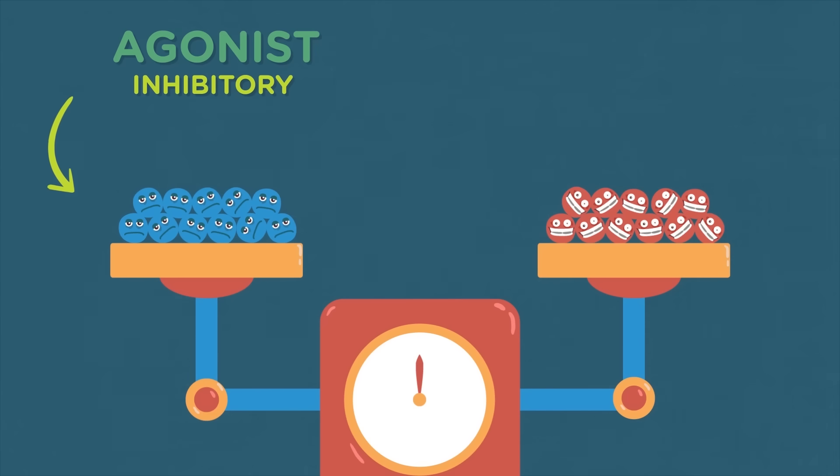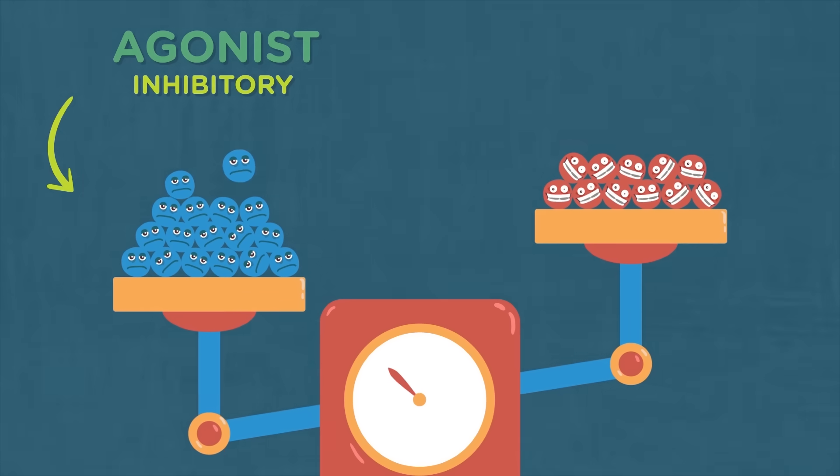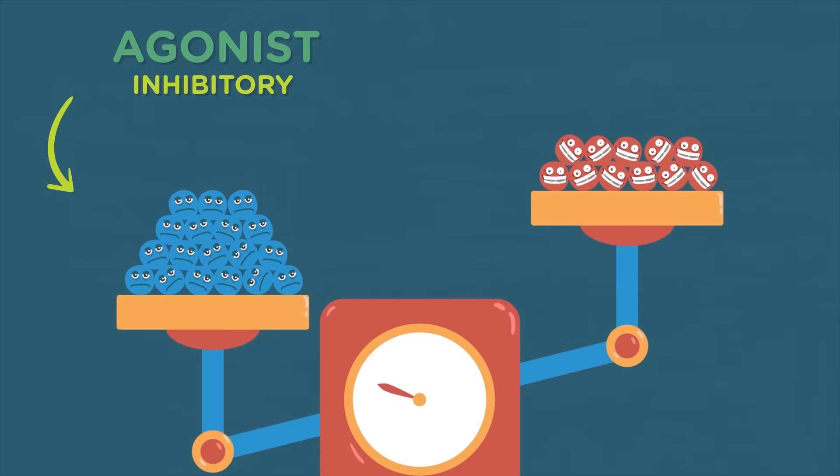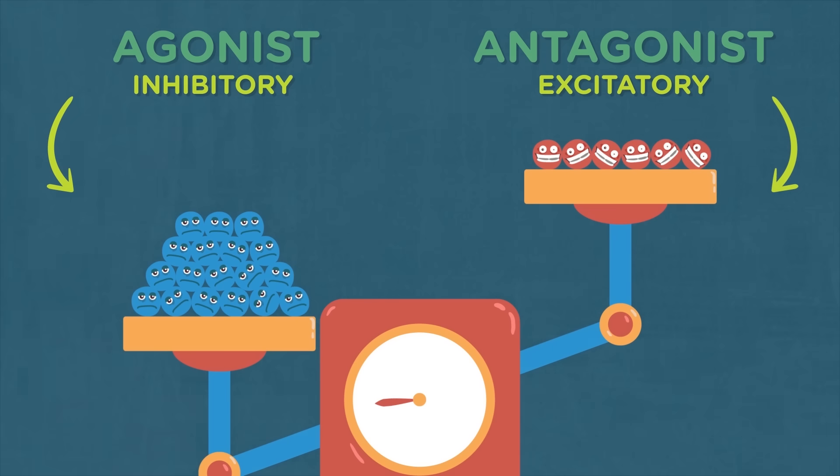But alcohol also acts as an agonist to inhibitory neurotransmitters, increasing their ability to slow down brain functions. Simultaneously, it acts as an antagonist to excitatory neurotransmitters, decreasing their ability to stimulate brain activity.